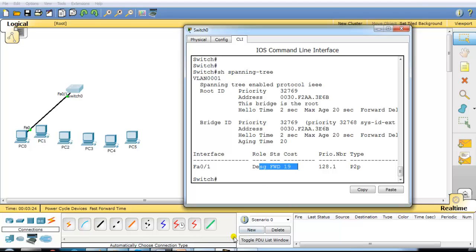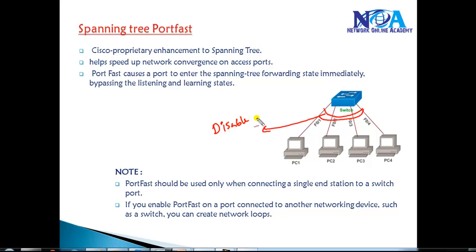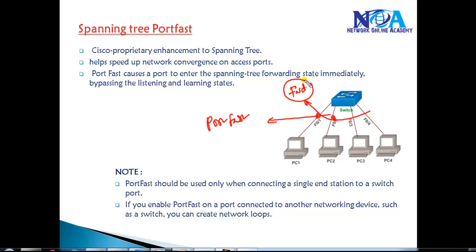We actually don't want this behavior. We can add an enhancement to the default spanning tree behavior where on access ports we can enable the PortFast feature. This will allow particular access ports to transition into forwarding immediately, bypassing the listening and learning stages. Once you enable PortFast, these ports will not go through listening and learning stages - they transition immediately into forwarding.